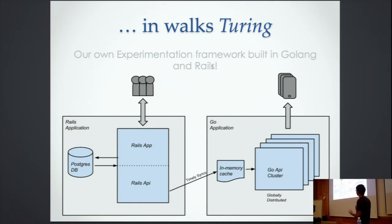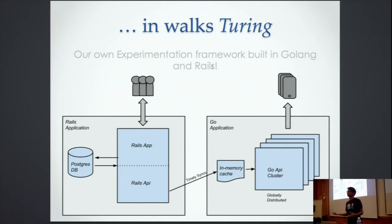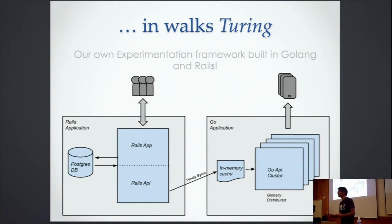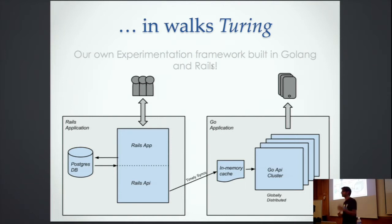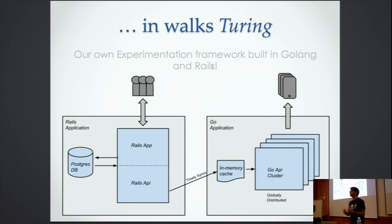You might be wondering why we chose a Go application and a Rails application. One reason is we needed to build it really fast and didn't have much time. Rails is just easier to build a front-end in, so we did the admin interface in Rails. But we needed speed in terms of API responses, which Rails is not great for, so we decided to go with Go.